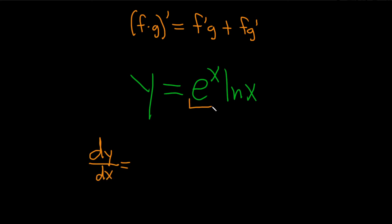So this is our first function, e to the x, and our second function is ln x. So the derivative of the first is just the derivative of e to the x. But the derivative of e to the x is just e to the x times the second.